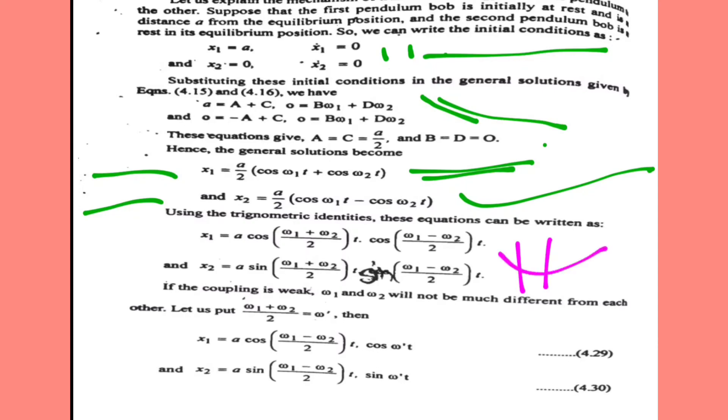Using trigonometric identities, these equations can be rewritten as: x1 = a * cos((omega1 + omega2)/2 * t) * cos((omega1 - omega2)/2 * t) and x2 = a * sin((omega1 + omega2)/2 * t) * sin((omega1 - omega2)/2 * t). These are the two expressions derived according to the trigonometric formula.